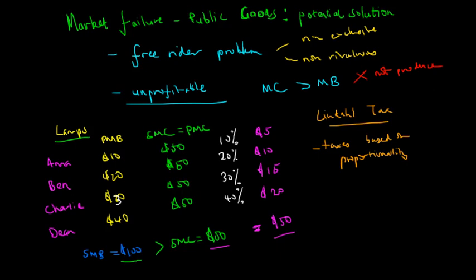And so now we can see that the net gain is actually, for Anna, $10 private marginal benefit minus her cost, a net gain of plus $5. For Ben, a net gain of plus $10, plus $15 for Charlie, and plus $20 for Dean. And so we get a plus $50 net gain for society. So now we can see that the Lindahl tax can, in fact, help eliminate the problem that there is an underproduction of public goods in the economy.